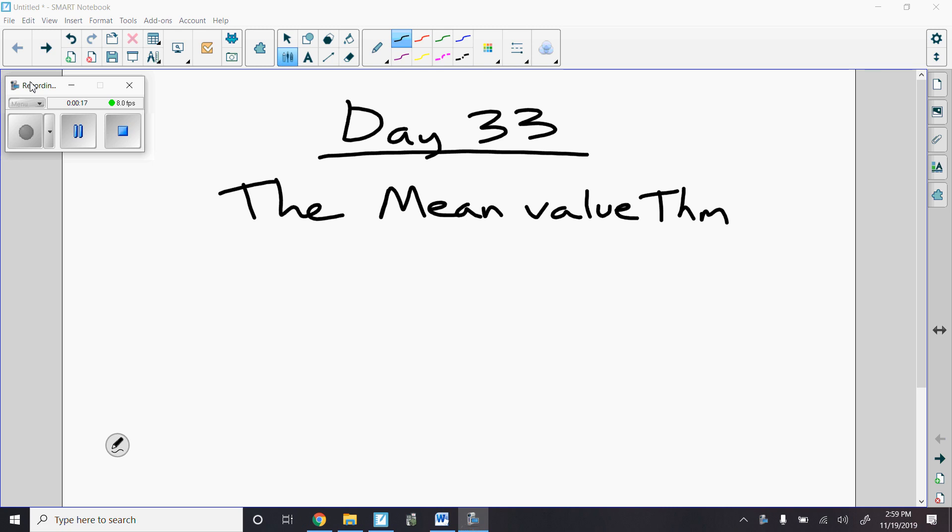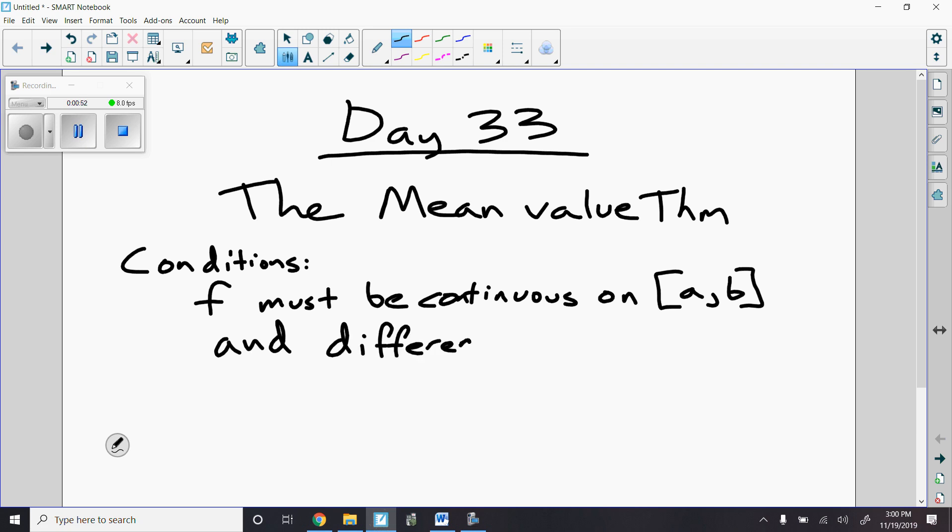Okay, so the mean value theorem starts with this. Let's talk about conditions for it. So in order for the mean value theorem to work, first off, F must be continuous on the closed interval A, B, and must be differentiable on the open interval A, B.